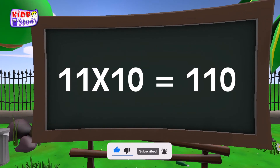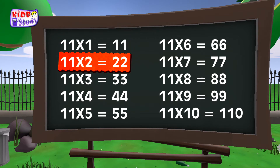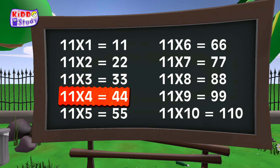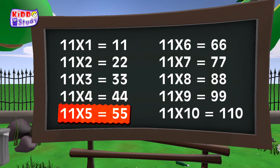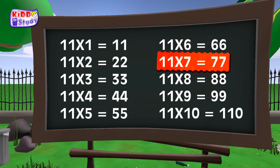One second, children. 11 ones are 11. 11 ones are 11. 11 twos are 22. 11 twos are 22. 11 threes are 33. 11 threes are 33. 11 fours are 44. 11 fours are 44. 11 fives are 55. 11 fives are 55. 11 sixes are 66. 11 sixes are 66. 11 sevens are 77. 11 sevens are 77.